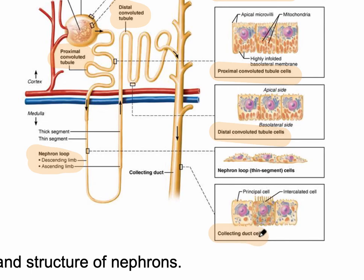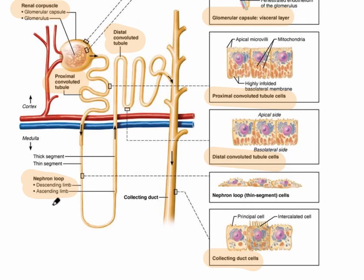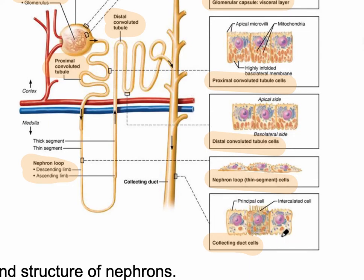One important thing to notice is that the nephron loop, also called the loop of Henle, has very thin epithelial cells which allows for the reabsorption of water and solutes. This is different from the proximal convoluted tubule cells, the distal convoluted tubule cells, and the collecting duct cells.